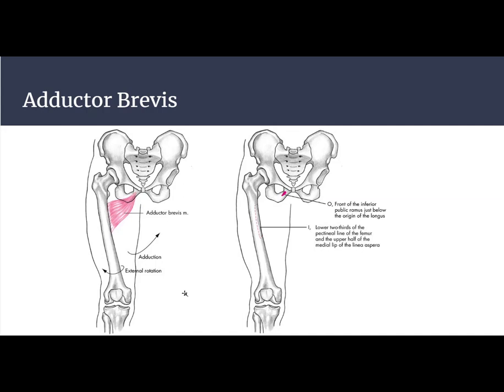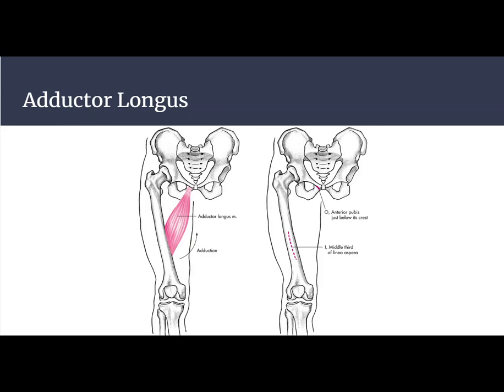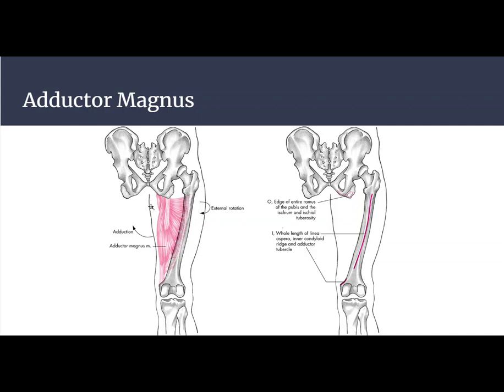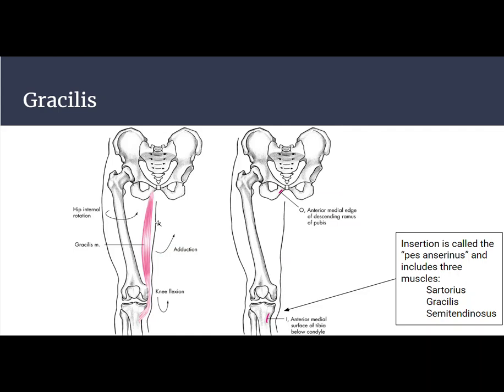If you can get your hands on a skeleton and some theraband or string, it's really important to look at the line of pull and how these motions are created. The adductor longus is longer and is an adductor. The adductor magnus can also go into external rotation of the hip — it's a super long muscle that goes along the linea aspera. The gracilis is the two-joint muscle that is posterior on the medial aspect of the tibia, so it helps with knee flexion. Its insertion is called the pes anserinus — pronounced different ways — and those three muscles are the sartorius, the gracilis, and the semitendinosus.